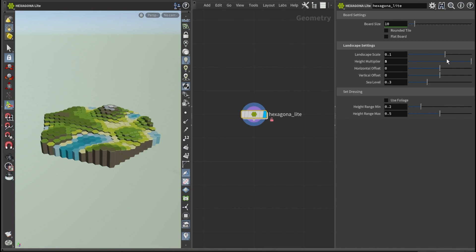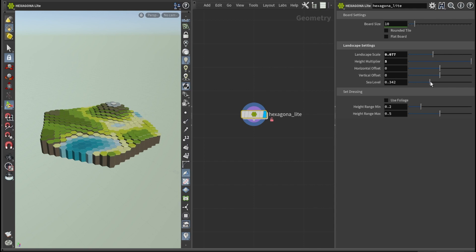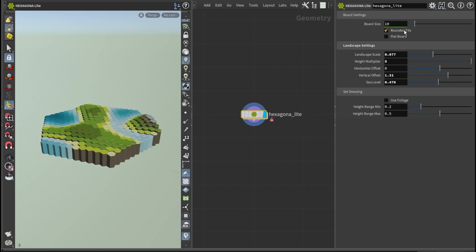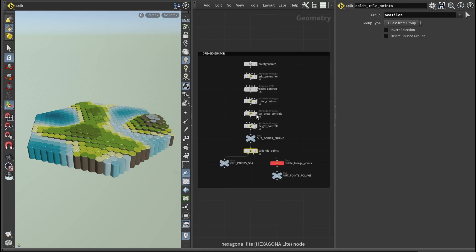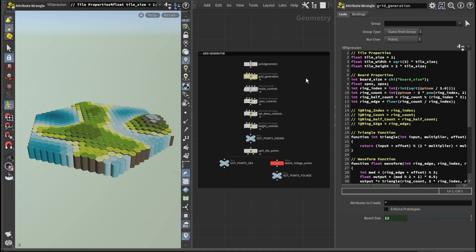You will also find a light version of the project that only contains the core functionalities. This stripped down version might be easier to deconstruct and see how it was built. For this breakdown we're going to be focusing on the grid generation, more specifically the first two nodes of the network.